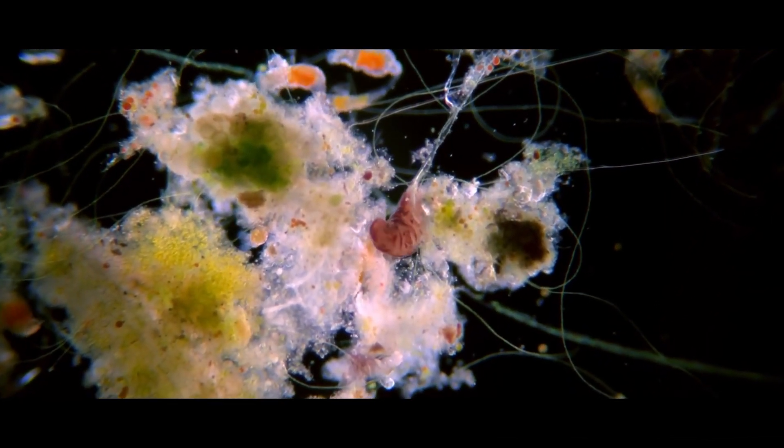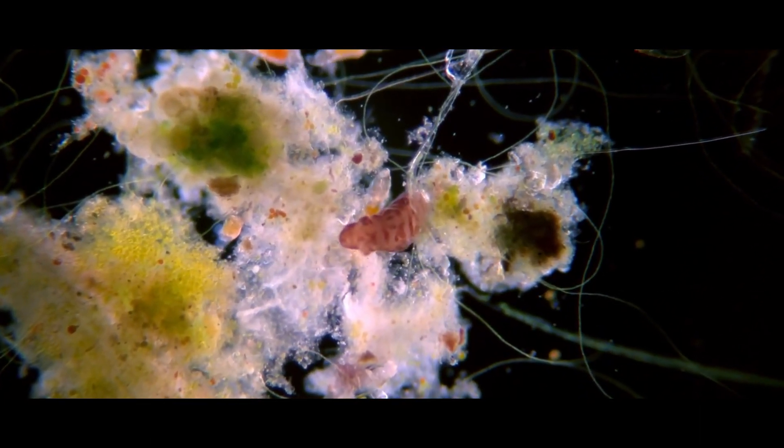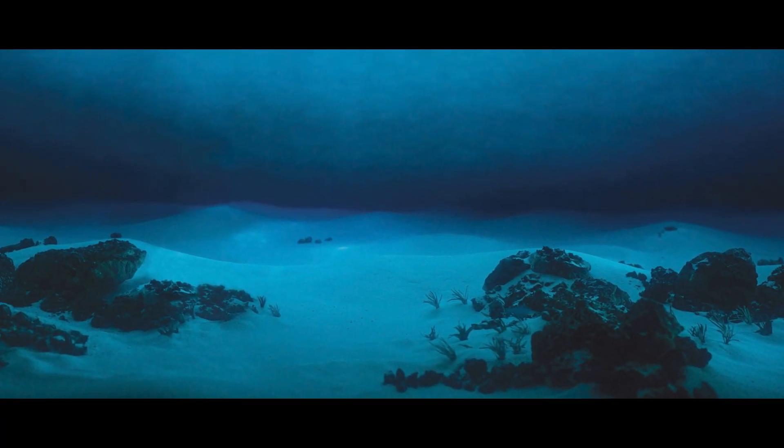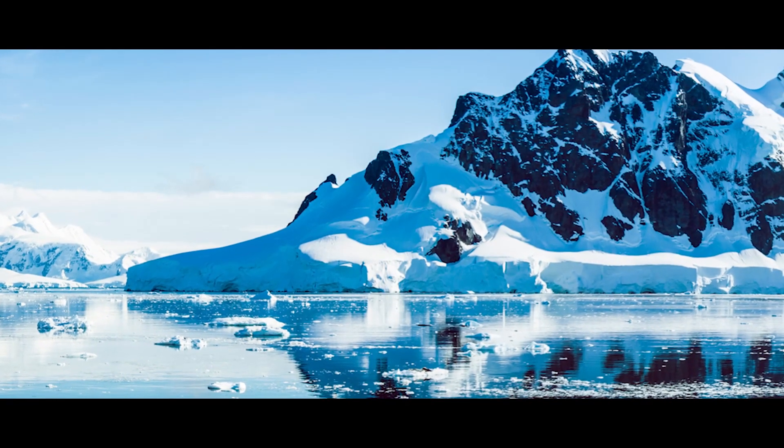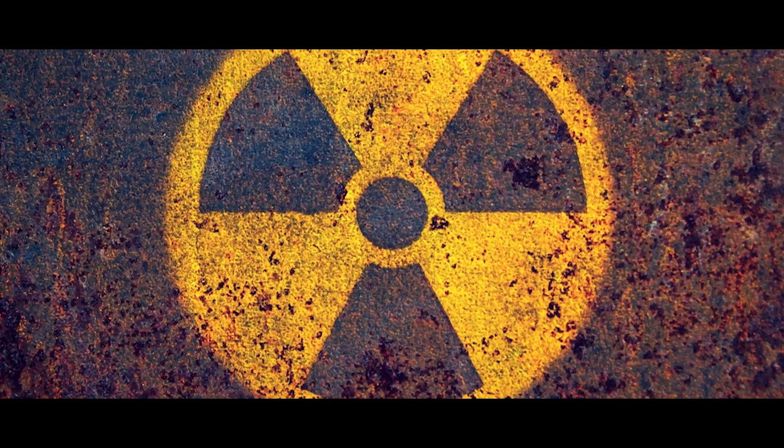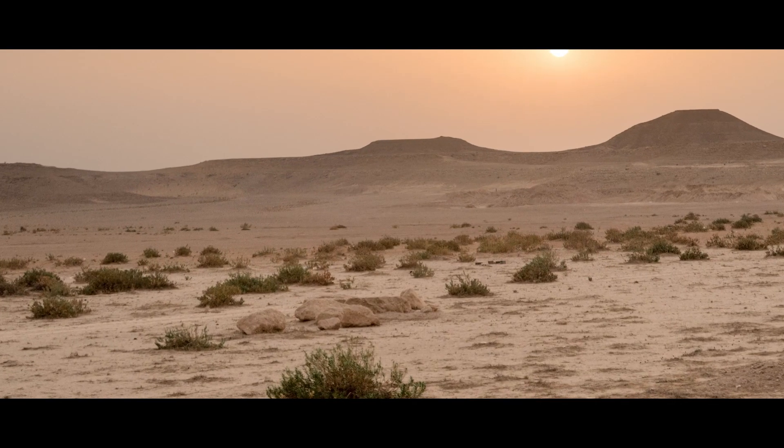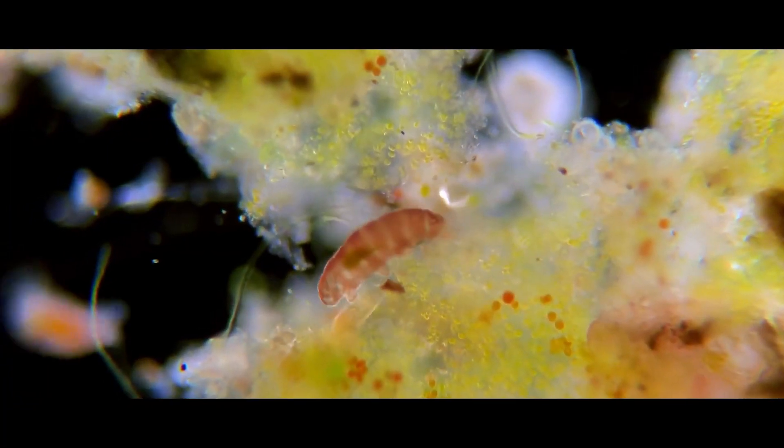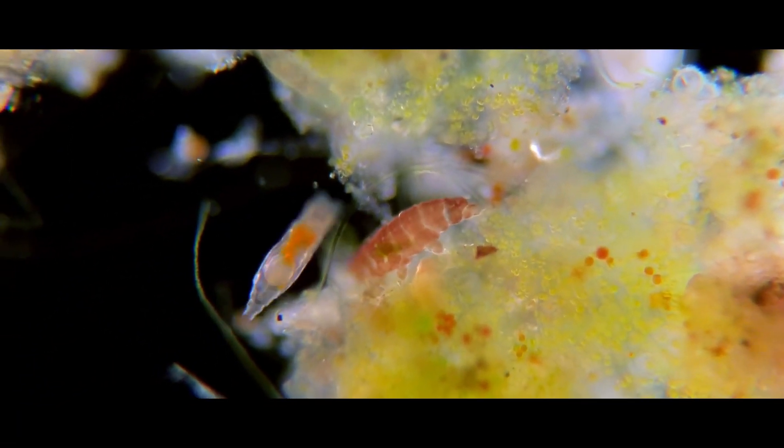Tardigrades are able to survive in mud volcanoes, against the pressures of the deep sea, the freezing temps of the Antarctic, without oxygen, under high levels of usually fatal radiation, lack of water, lack of food, and in the vacuum of space.